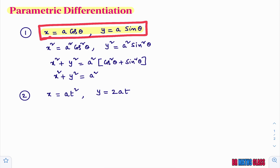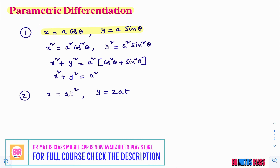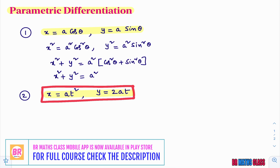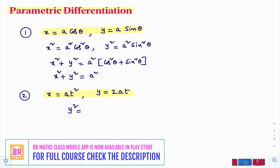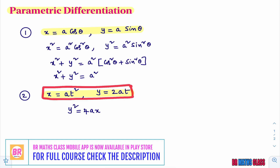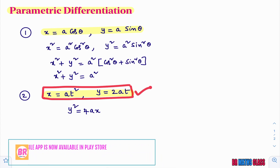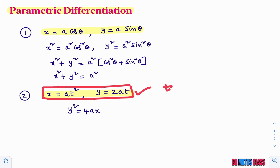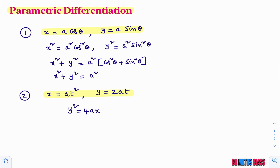x equal to a cos theta, y equal to a sin theta are the parametric equations with parameter theta. Now observe this: x equal to at square, y equal to 2at. These are also parametric equations. These two equations together represent the curve y square equal to 4ax. We know that y square equal to 4ax is a parabola open towards the right side. The parameter here is t. For different values of t, you will get different points on the curve y square equal to 4ax.